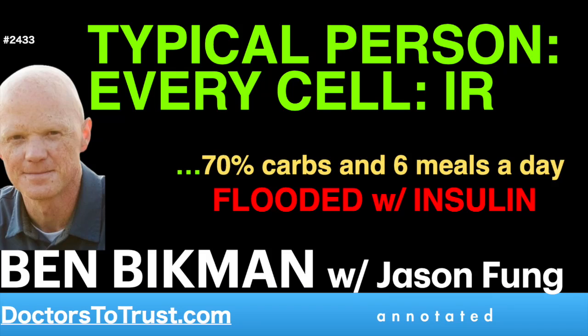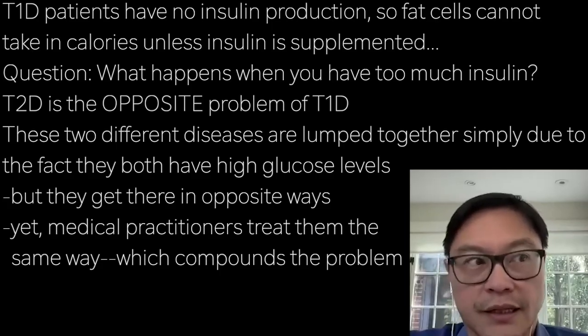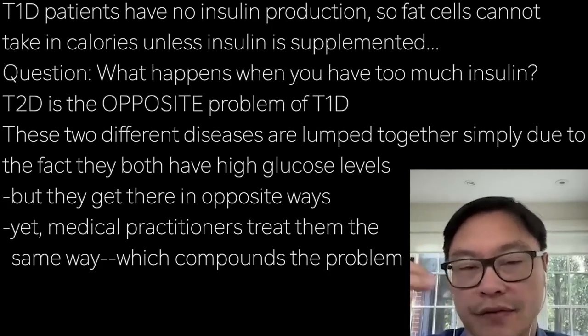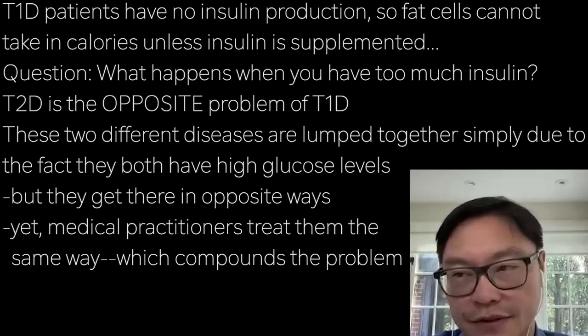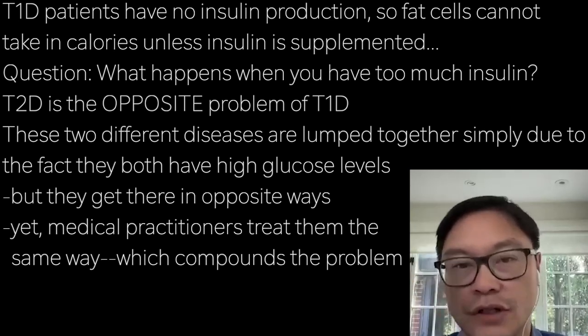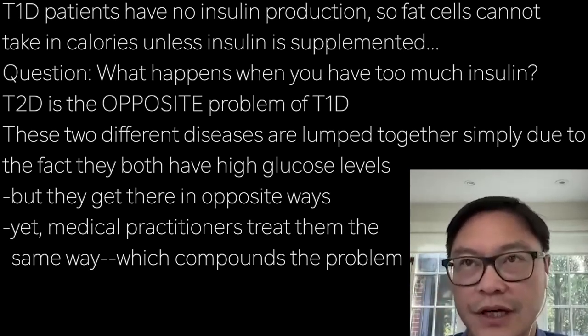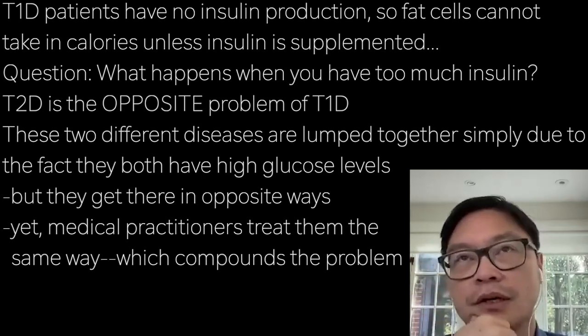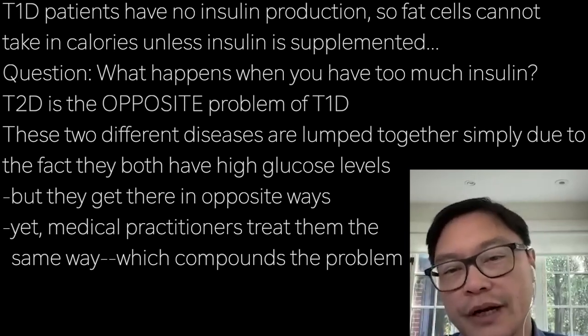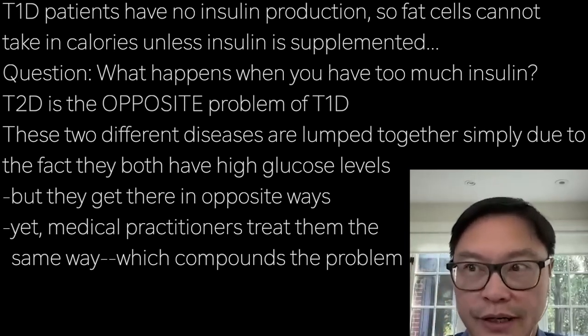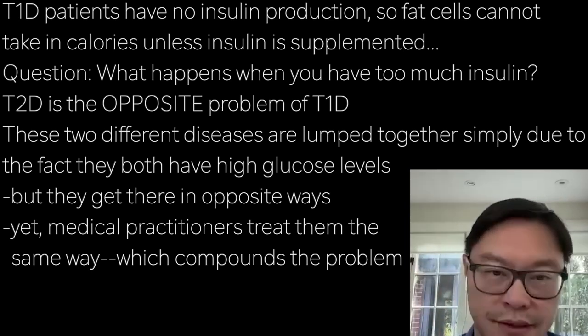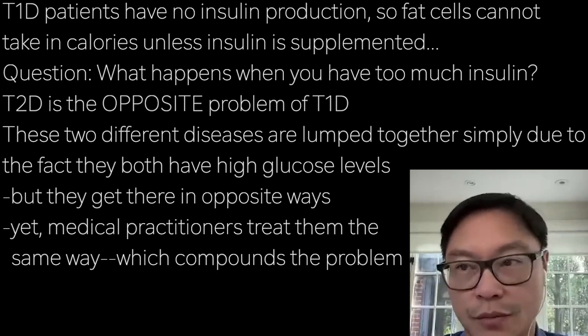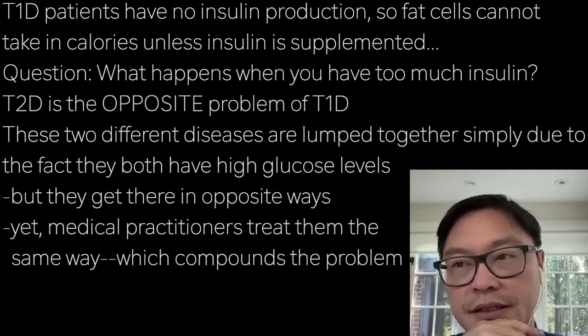The funny part about it is that every cell in the body is the same way. There are trillions of cells, hundreds of cell types, and it all needs to be coordinated. So you must coordinate it with signals, and most of those signals are hormonal signals. In this case, it's insulin.